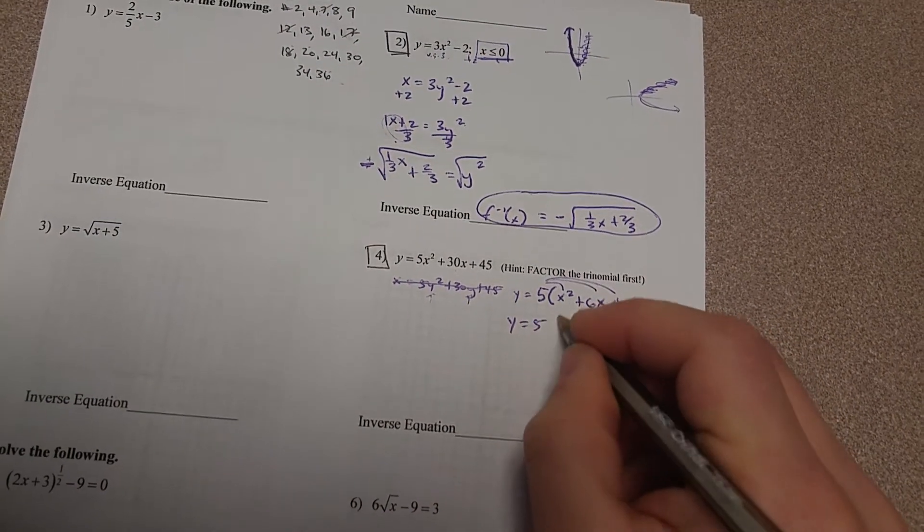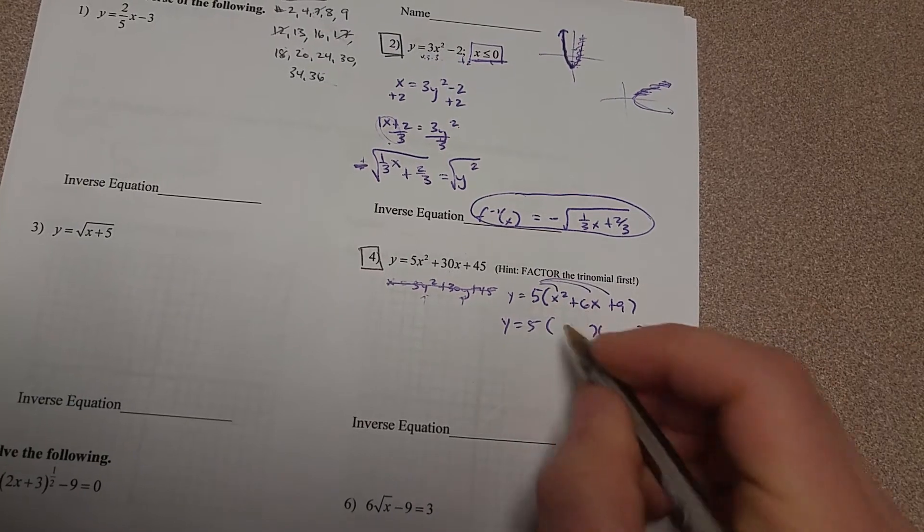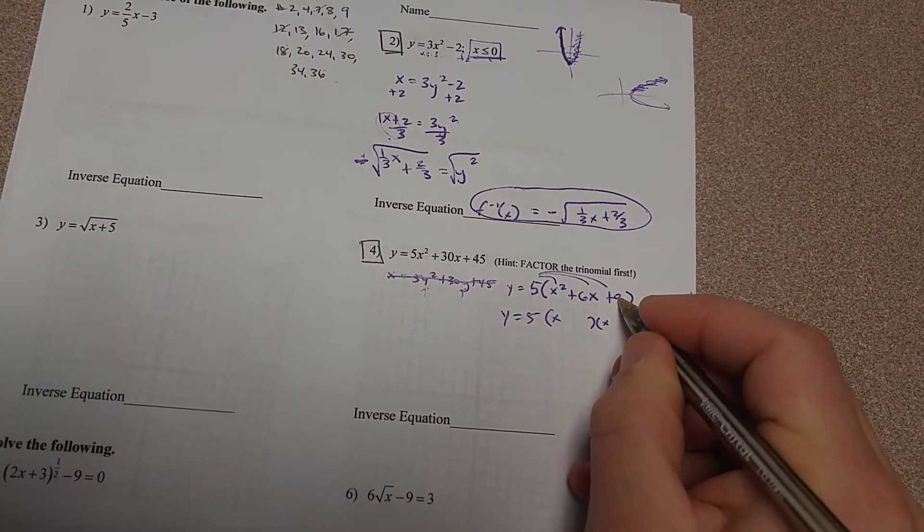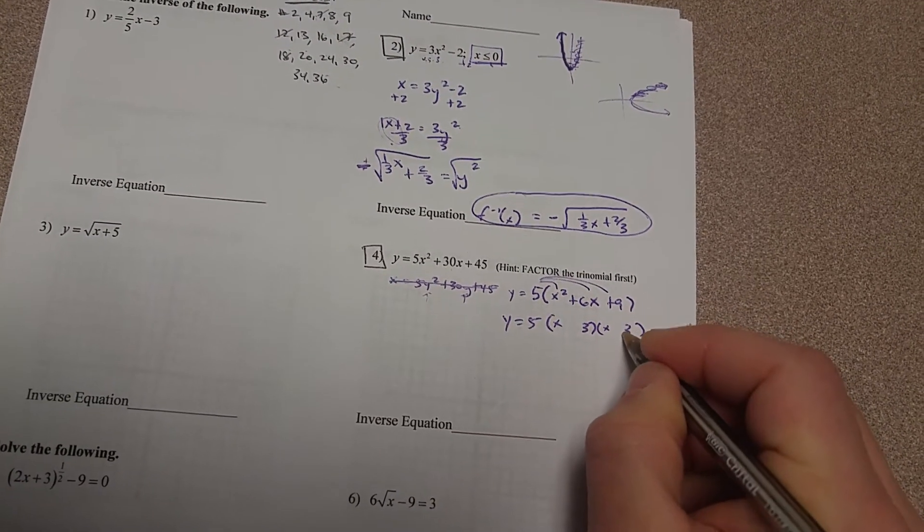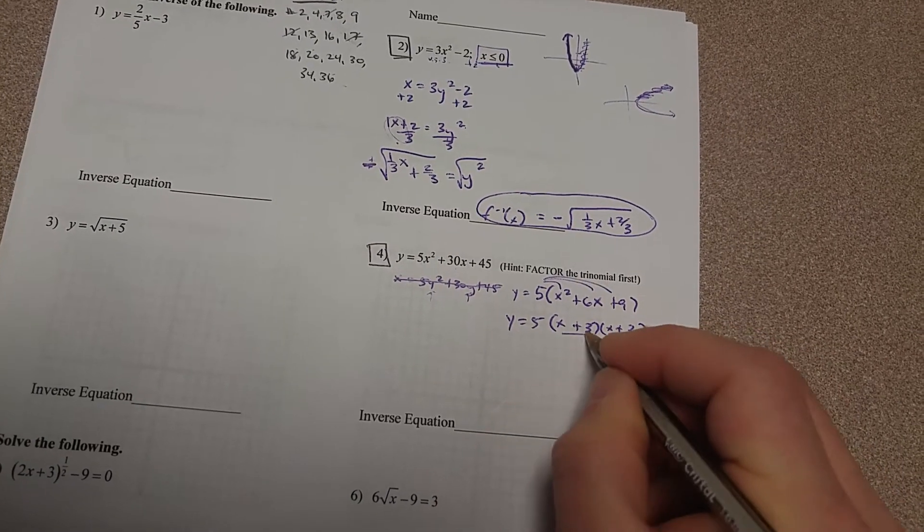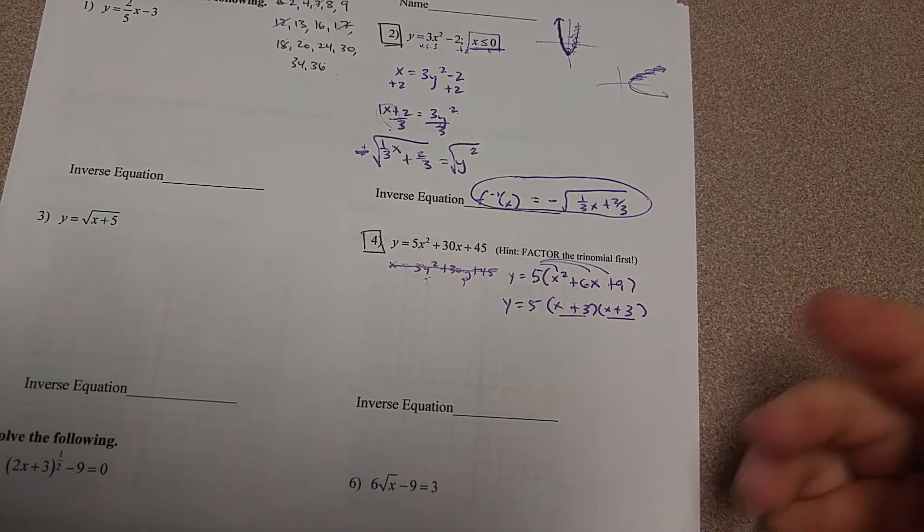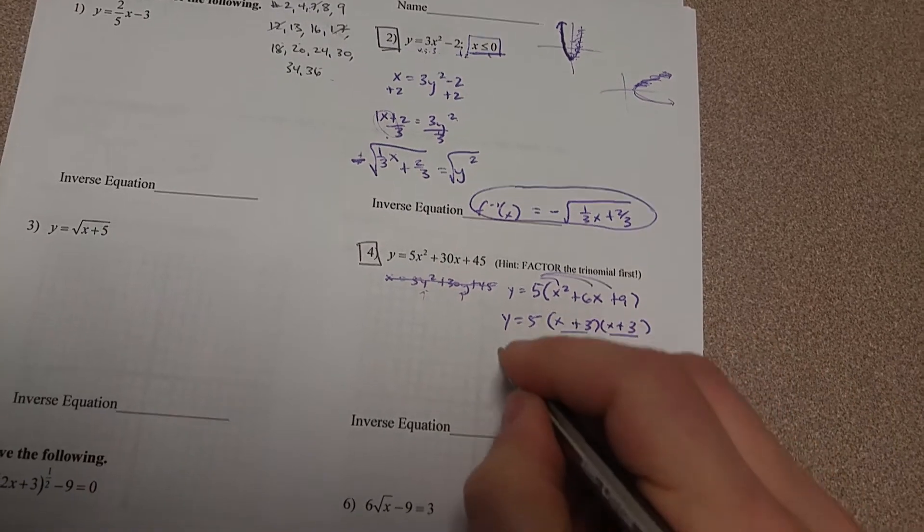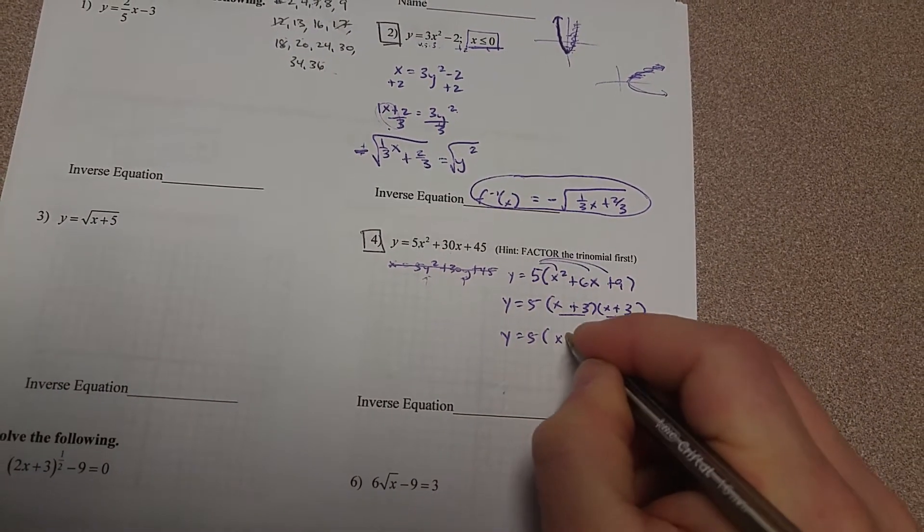And once I factor that, I can now factor this trinomial, and I get x and x. To get 9, I'm going to use 3 and 3, and everything's positive. So now you notice that these two things are the same, which means I can push them together. So I end up getting this.